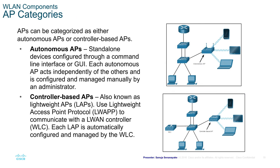There are two access point categories: autonomous and controller-based. Autonomous APs are standalone devices configured through a command line interface or GUI, similar to Cisco CLI. Each autonomous AP acts independently and is configured and managed manually by the administrator — each device has its own configuration built into it.